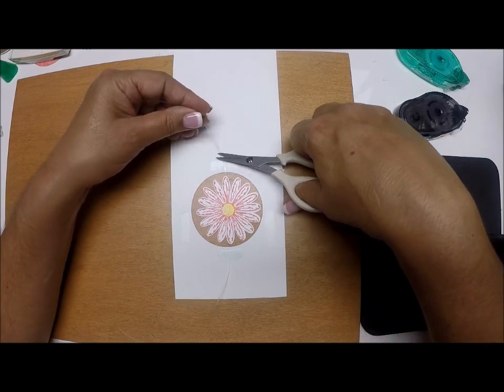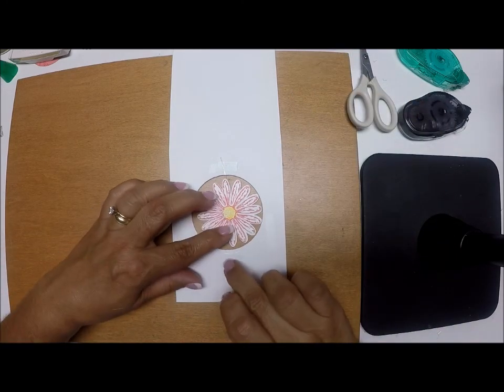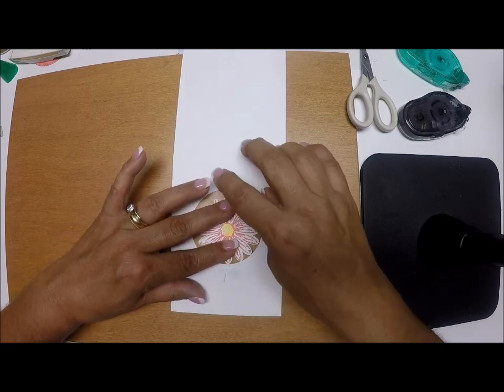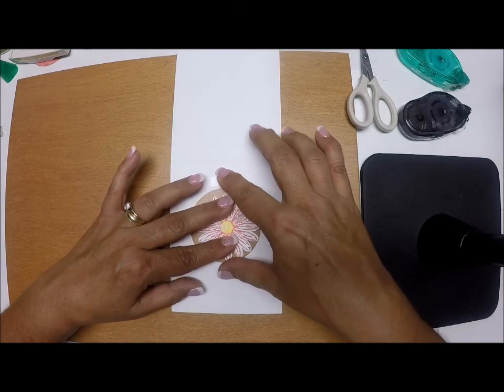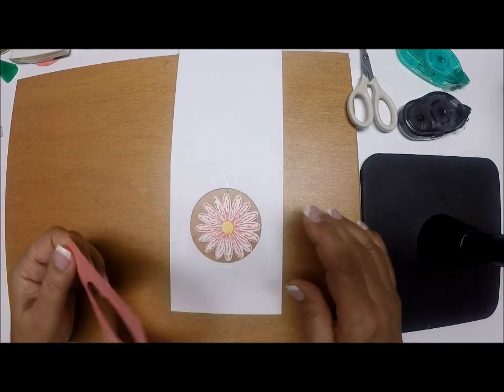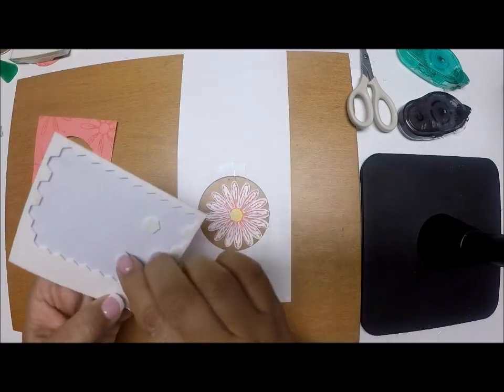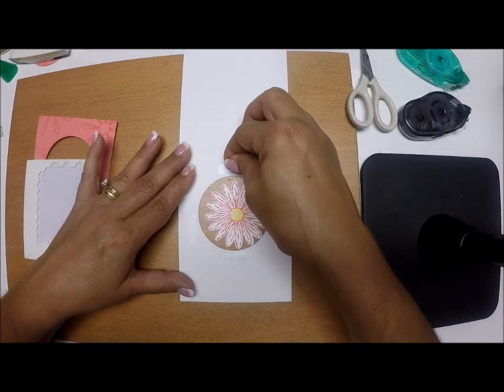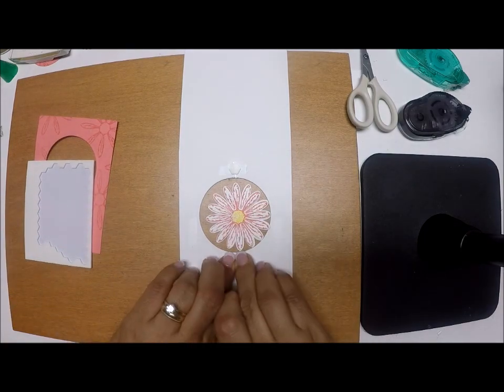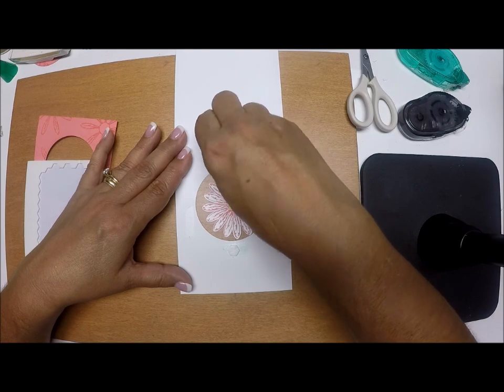Now I'm going to trim my fishing line. Because I want to make sure that this is going to stay nicely, I'm going to put a Stampin' Dimensional right on top of that, right there, so that it gives it a little extra hold.